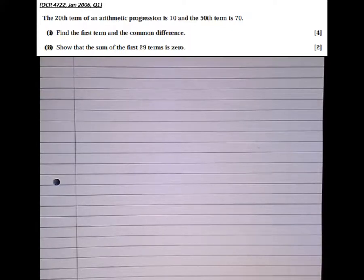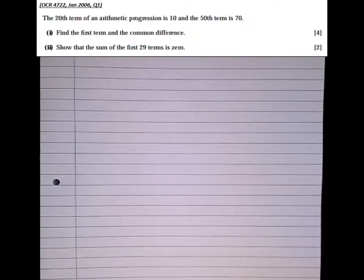Find the first term and the common difference. Show that the sum of the first 29 terms is zero. Well first of all, we need to consult our formula sheet here.